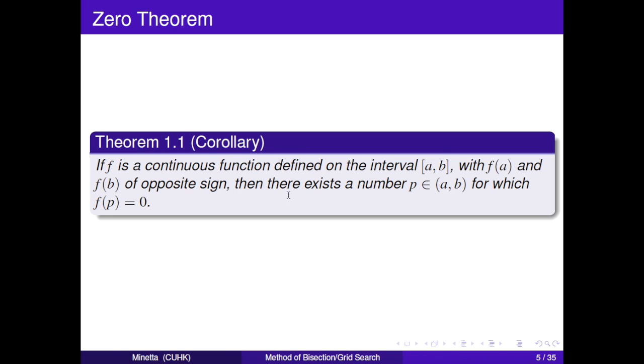Compared with the first one, this corollary just says k equals zero. If f is a continuous function defined on interval [a, b] with f(a) and f(b) of opposite sign, then there exists a number p in [a, b] for which f(p) equals zero.